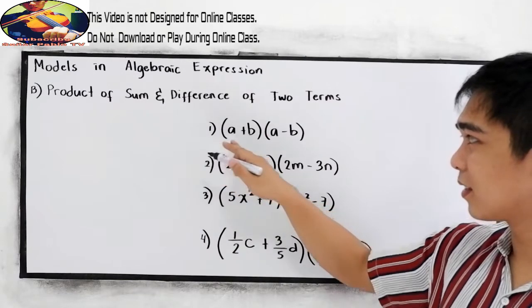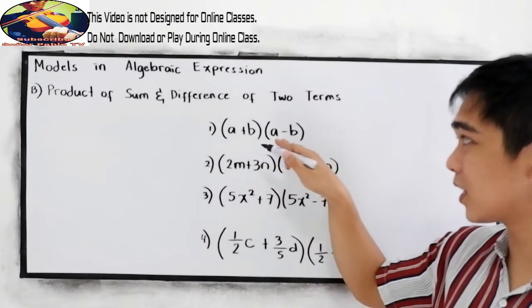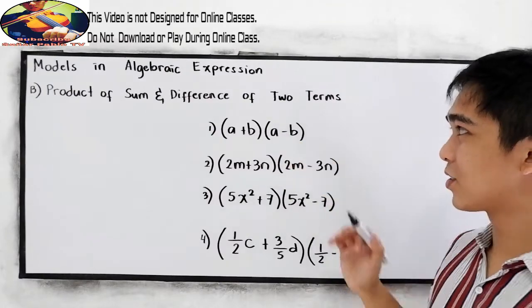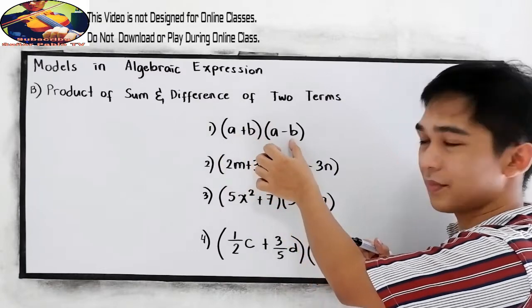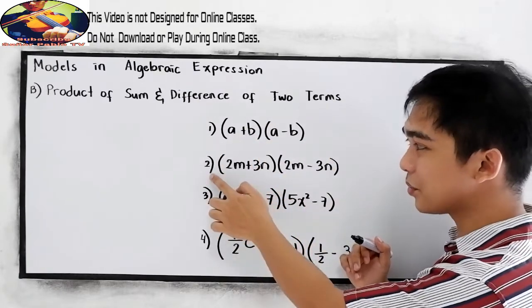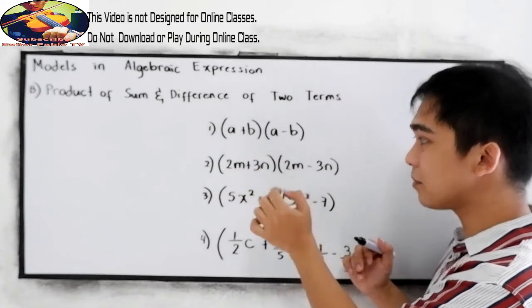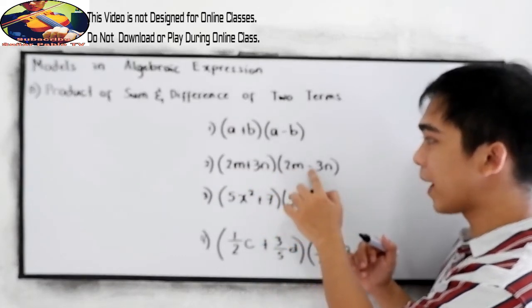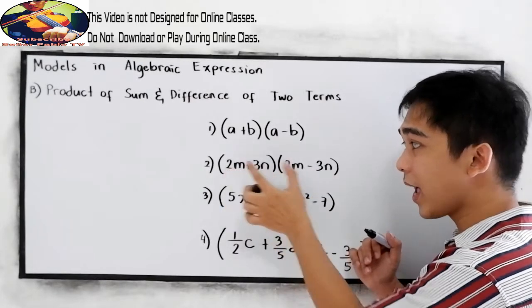Number one, quantity A plus B times quantity A minus B. So sum and difference of two terms. Number two, 2M plus 3N times 2M minus 3N. We have the sum and the difference.